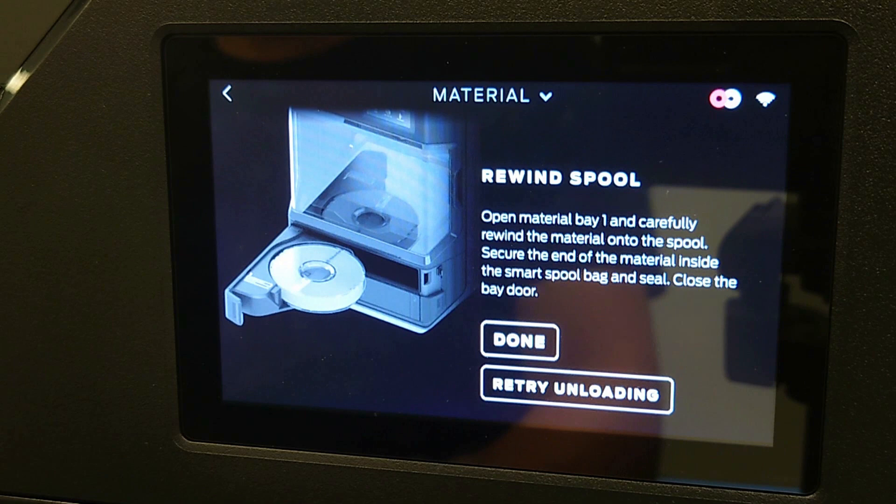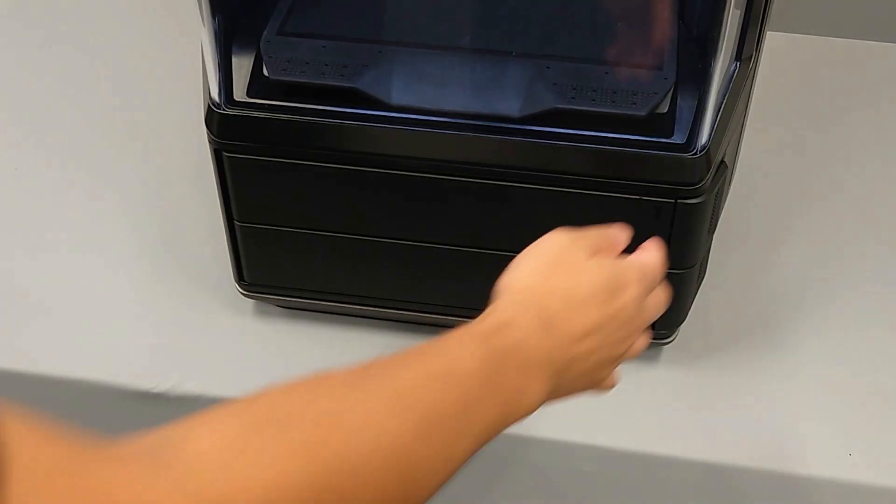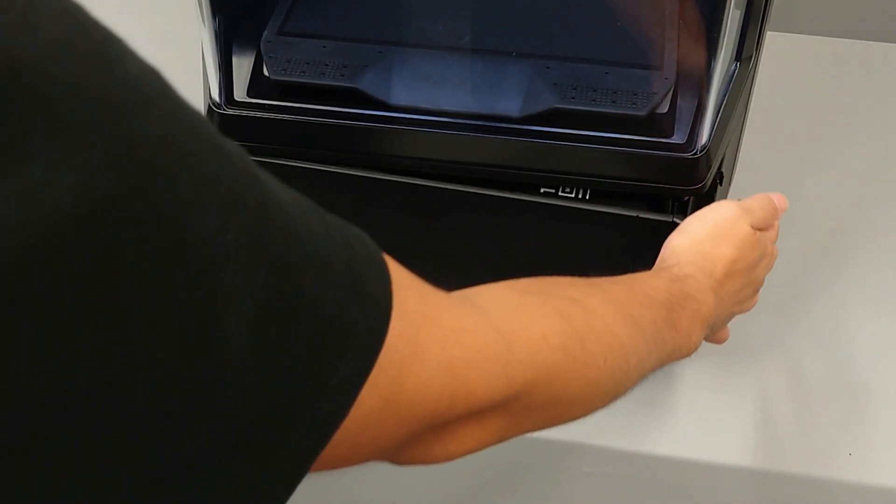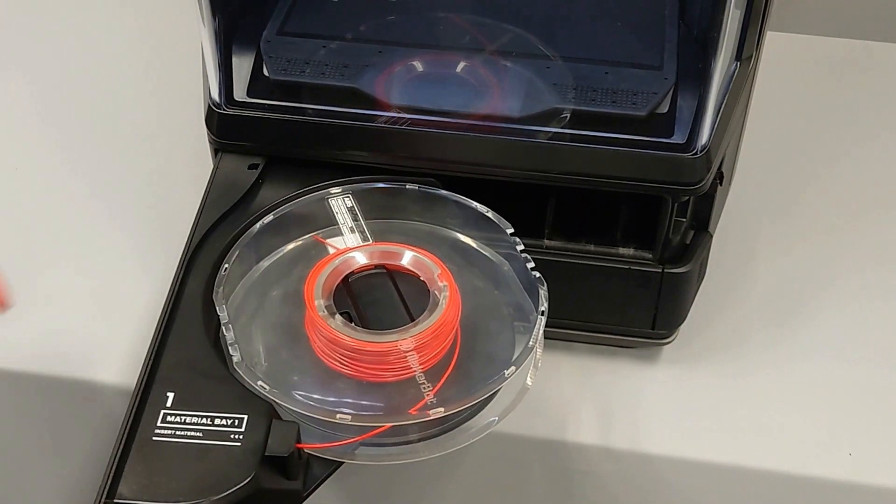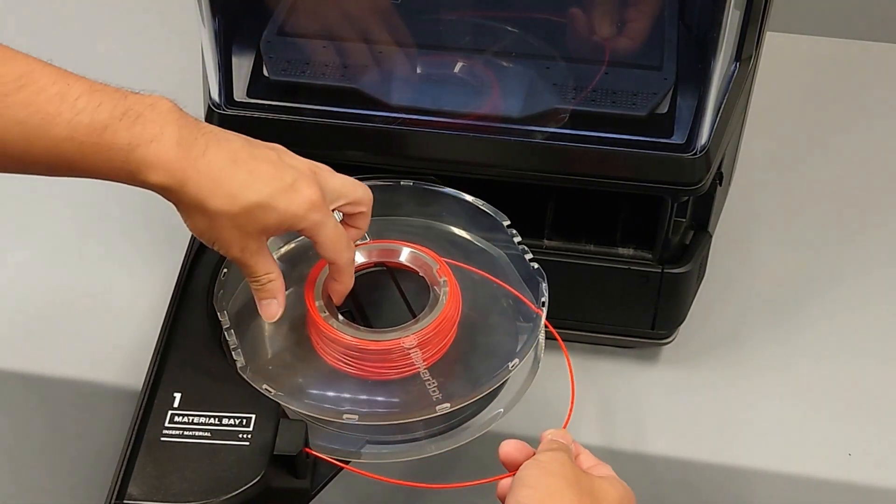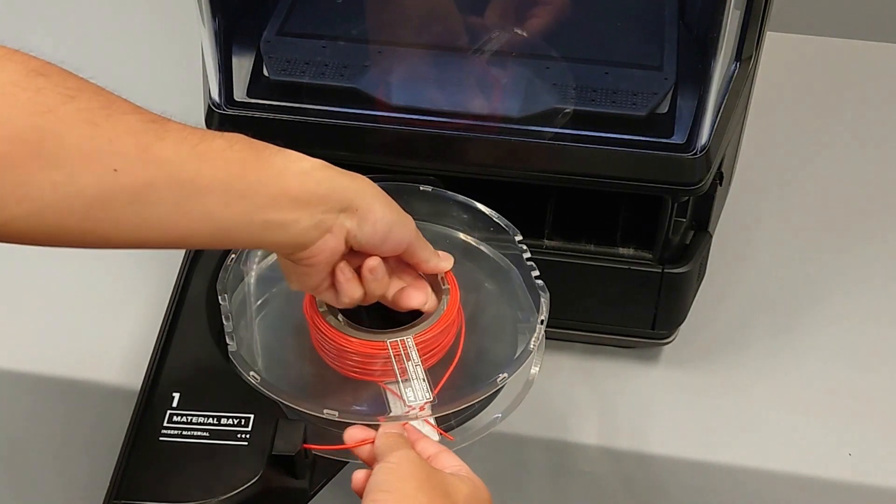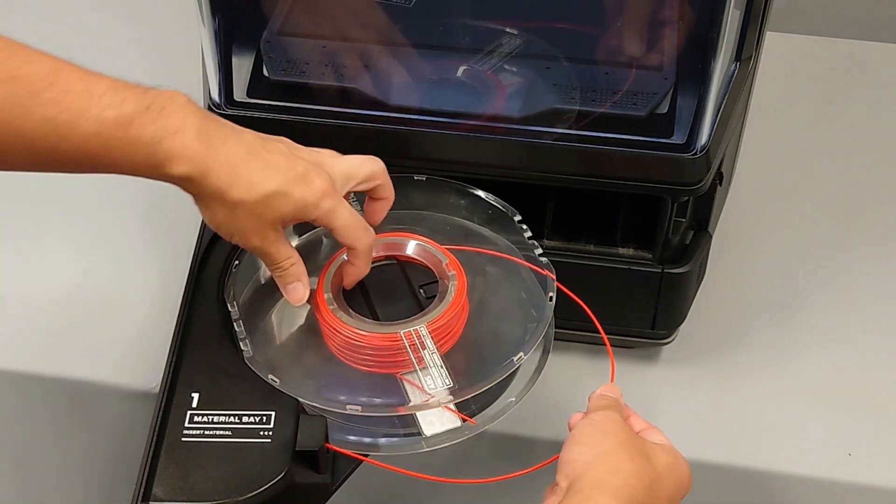After the material backs out, you will see a message asking you to rewind the spool. Press the release tab on the material bay that corresponds to the material that you are loading and slowly turn the spool counterclockwise.